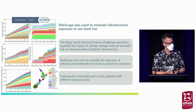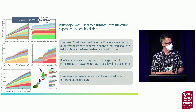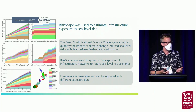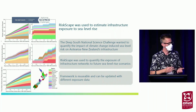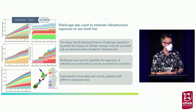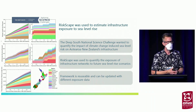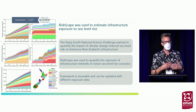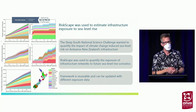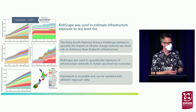Through the Deep South National Science Challenge, RiskScape was used to estimate infrastructure exposure to sea level rise. National networks of road, electricity, airports, and rail were overlaid with potential sea level rise scenarios to quantify the number of infrastructure network exposures under different scenarios and identify where the greatest risk is. This type of analysis can be used as a first screening step before more detailed risk assessment focused on specific areas.